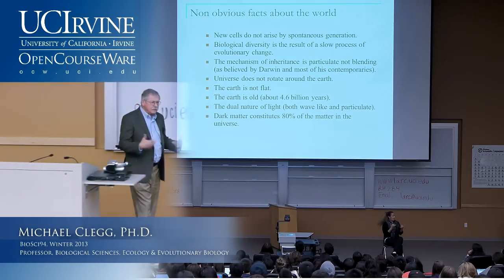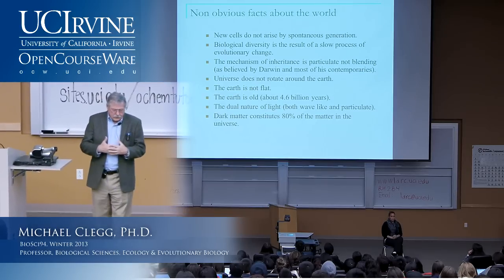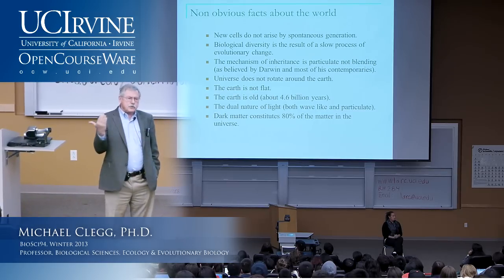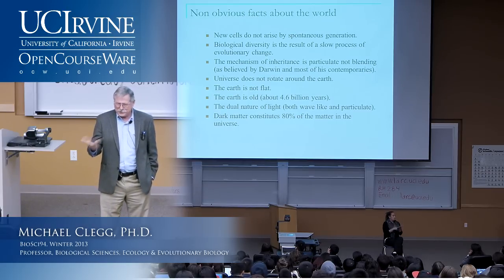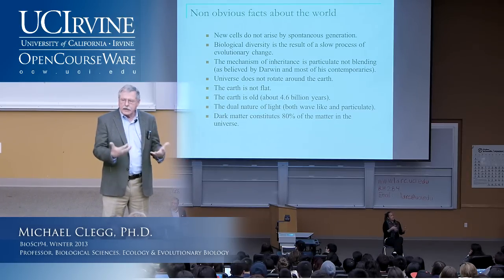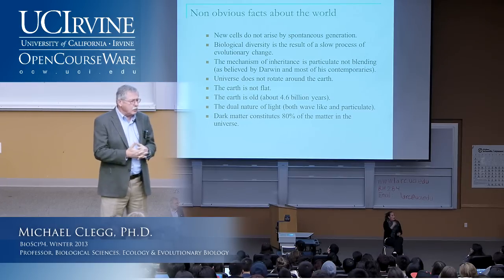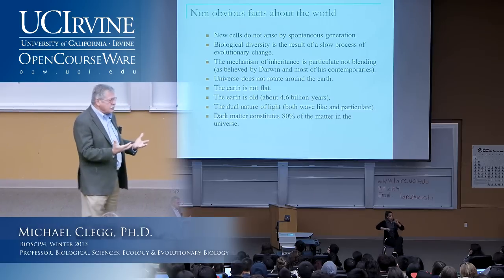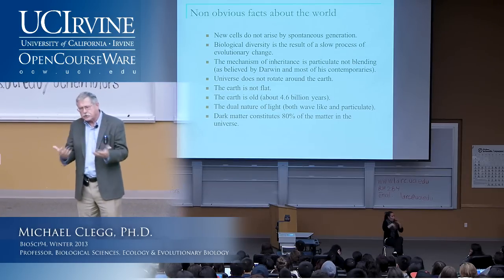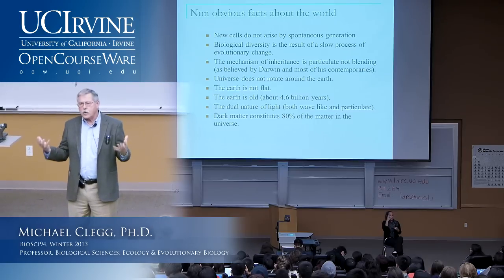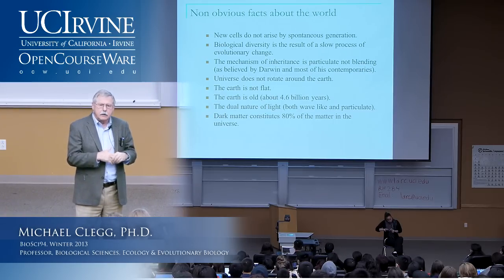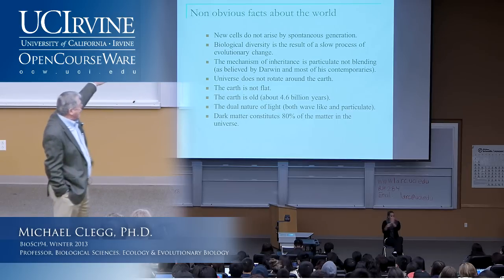Let me now turn away from course administration and begin to talk about the real subject matter of this course. I'm going to cover the first chapter of your book in this lecture. One of the questions to begin with is: why is science important? Why has it had such a big impact on our understanding of the world? The answer is that science reveals through experiment and careful observation non-obvious facts about the world. Our intuition leads us to conclusions which are often not right, and science has provided a methodology that allows us to probe more deeply into natural phenomena.